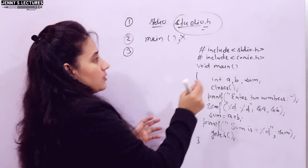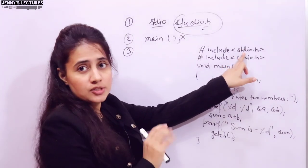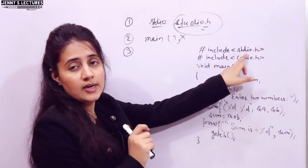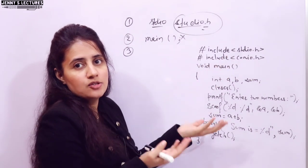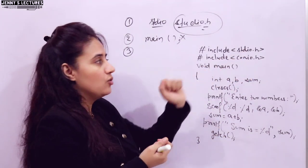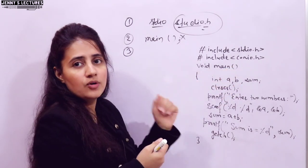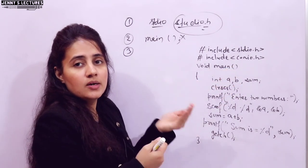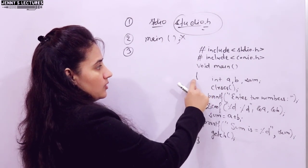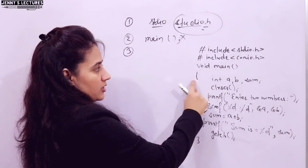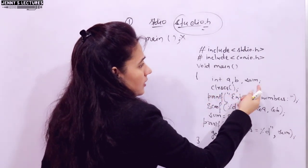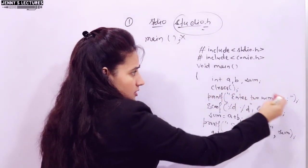If you write 'studio.h' instead of 'stdio.h', you will get the error 'unable to open this file' because there is no 'studio' file — the correct file is 'stdio.h'. If you put a semicolon after main, you get 'declaration terminated incorrectly' and the cursor will point to that line.